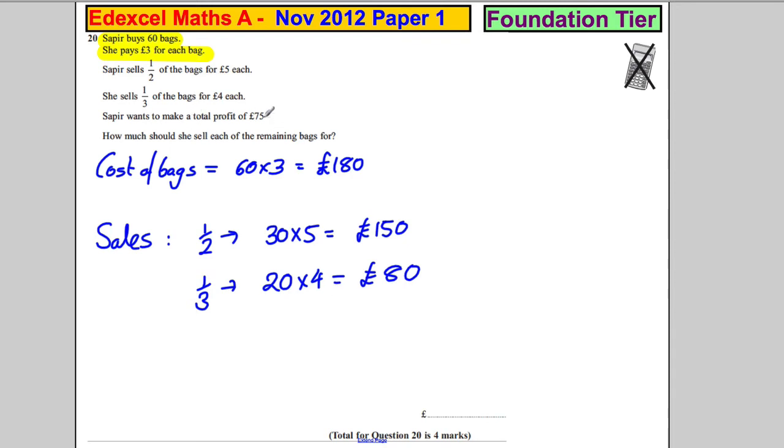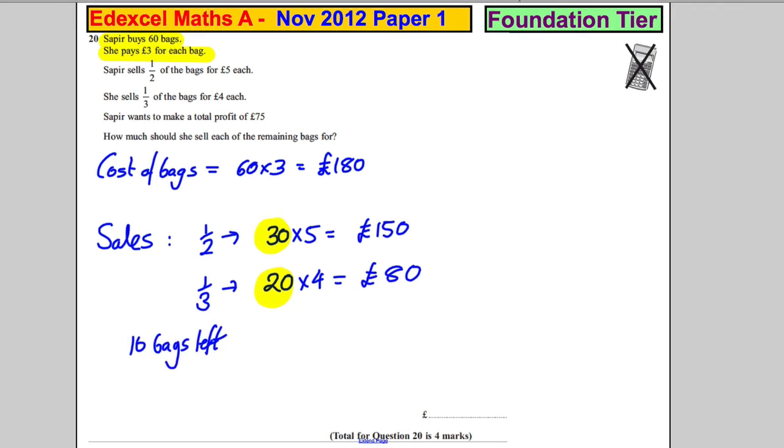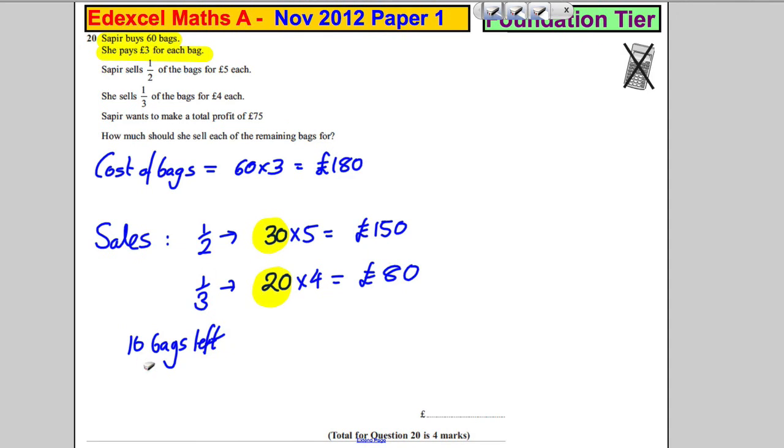Sapir wants to make a total of 75 pounds. How much should you sell the remaining for? Now, let's just think how many she sold. She sold 30 and 20, so she's got 10 left. She's got 10 bags left. And she wants to make a profit of 75 pounds.